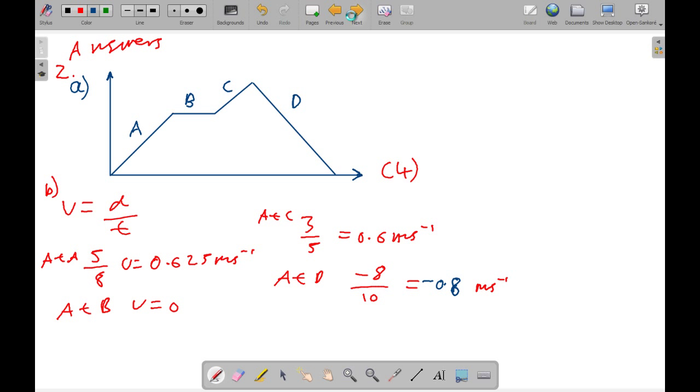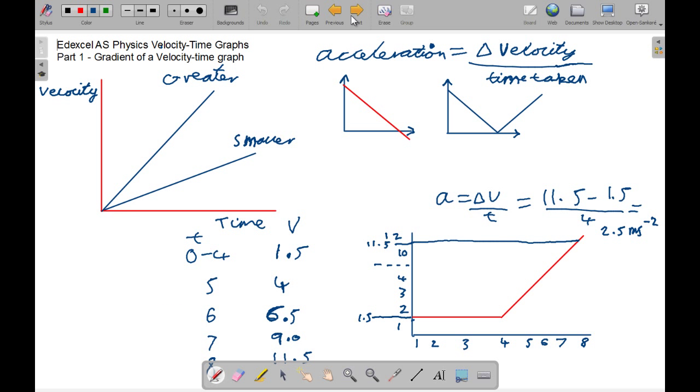Now we move on to velocity-time graphs. So greater straight gradient means greater acceleration, and a smaller gradient means a smaller acceleration. Pretty simple. So acceleration is the change in velocity over the time taken. We can also have the velocities going in different directions. So this is what this graph shows - the speed of the ball or an object thrown, and it changes direction here. This particular one changes direction, and this one is a constant negative velocity rather.